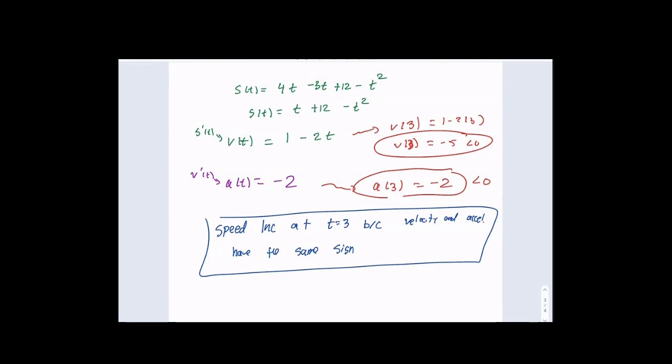I can say 'same sign' because I found and showed what those signs are — velocity is −5 and acceleration is −2, both negative. If you didn't find the actual values and just tried to guess, you wouldn't get credit. You need to show your work — don't guess. That's how I solve a question when asked about a specific point in time.